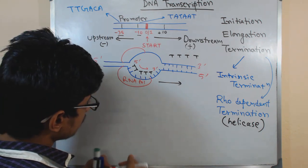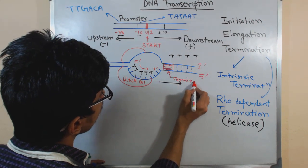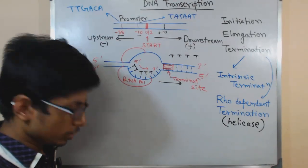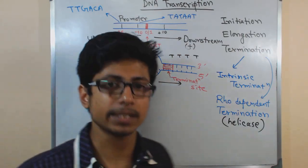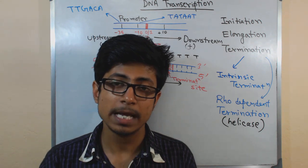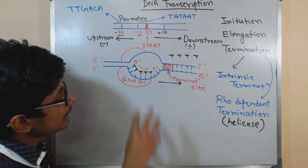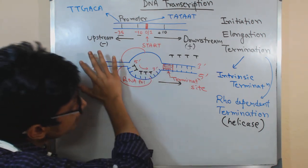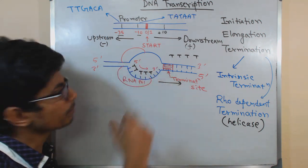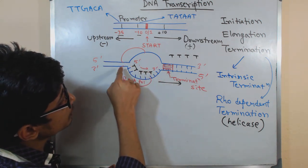Let us assume this is the stretch of termination — this is the site for termination. The RNA polymerase can sense things. RNA polymerase along with the sigma factor senses the promoter and the start site of transcription, and RNA polymerase itself can also sense the terminator sequence present in the DNA. Once it senses that, the transcription bubble is very close to the termination site, and RNA is being produced.